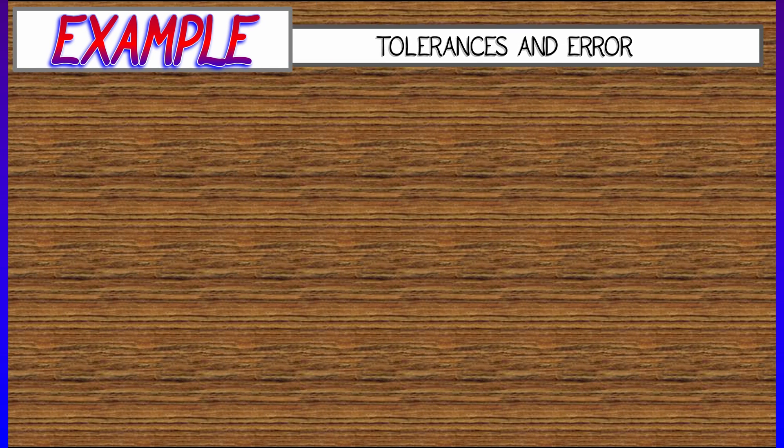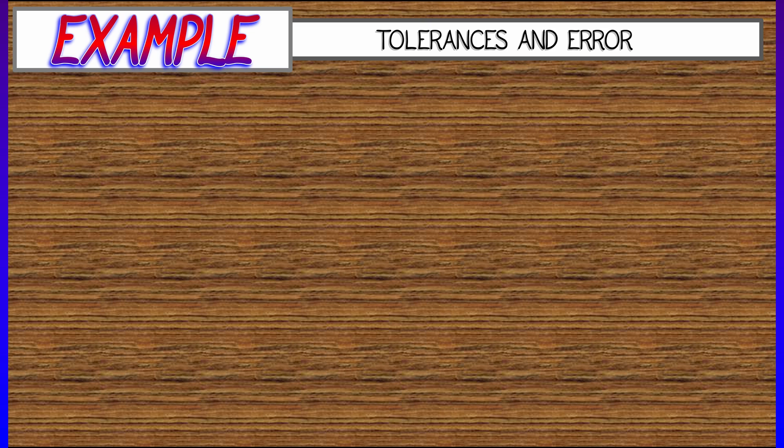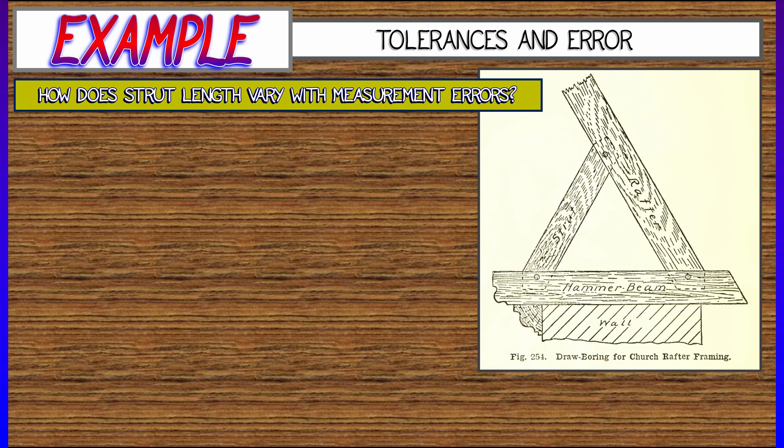Okay, here's another example having to do with tolerances in a more architectural setting. Let's say that I have a couple of beams, pieces of wood, that are fastened together. And I want to estimate lengths based on tolerances.